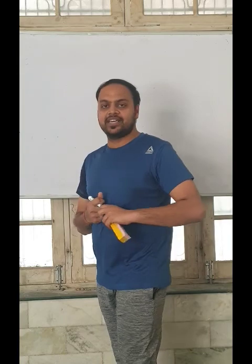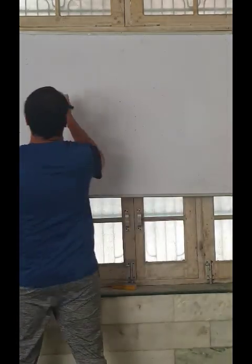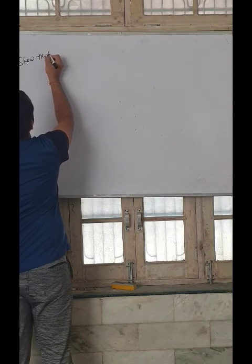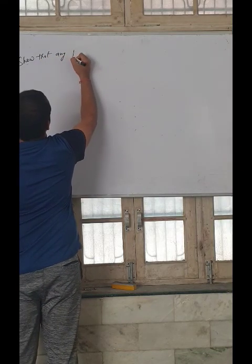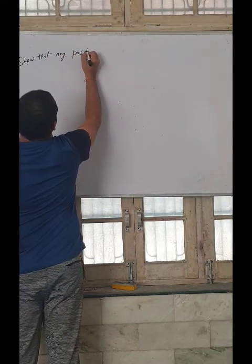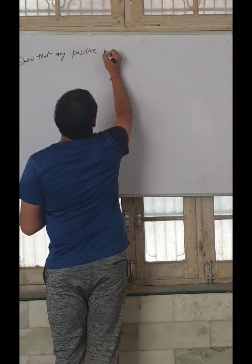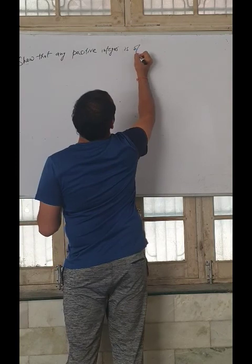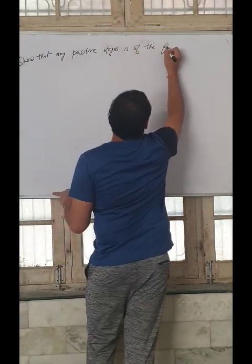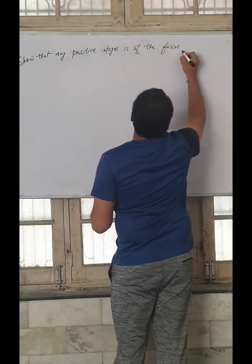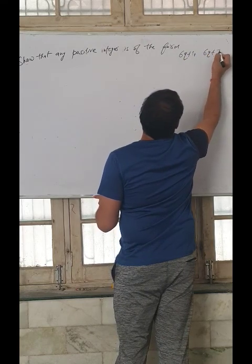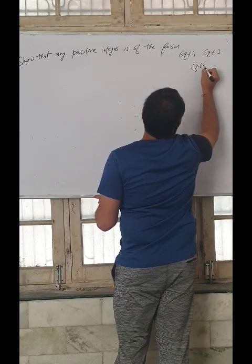Today we will do the second question which I am going to note first in the statement. Show that any positive odd integer is of the form 6q plus 1, 6q plus 3, and 6q plus 5.